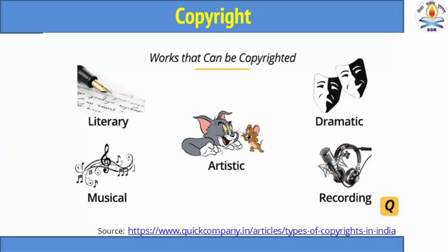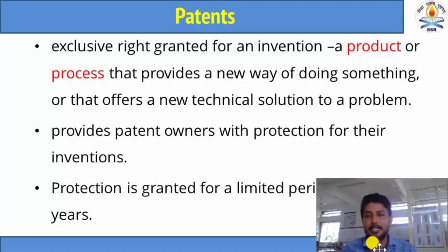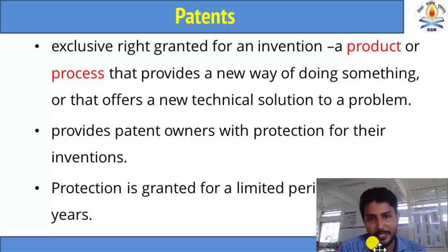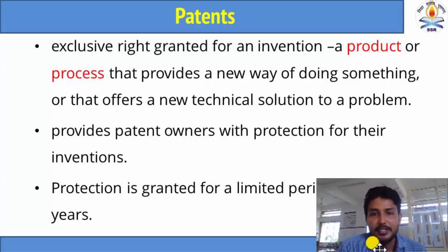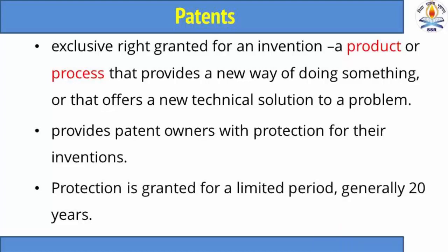Another IPR is patent. What is a patent? A patent is an exclusive right granted for an invention. An invention may be a product or a process — it provides a new way of doing something or offers a new technical solution. Basically patents are of two types: product patent and process patent. The patent owner is awarded protection to use their invention for a limited period of time — that is 20 years, and in some cases it may be extended up to 25 years. After that, the invention becomes public and anyone can use it without permission.